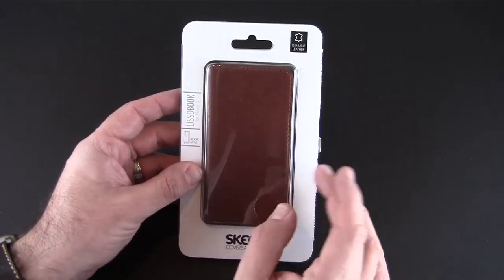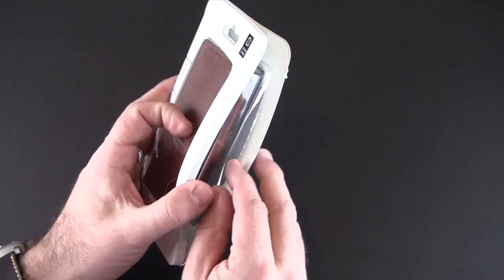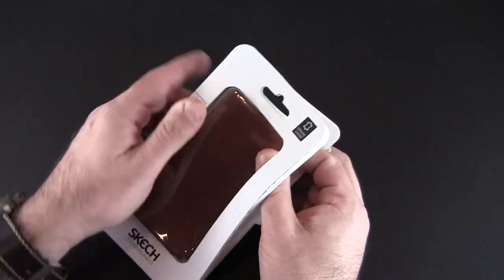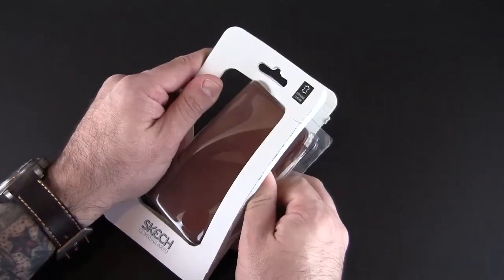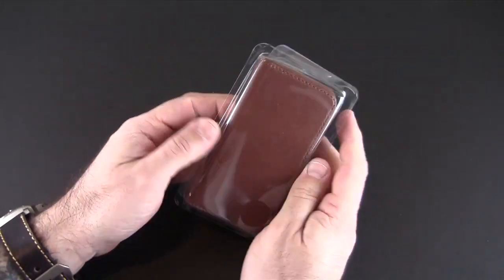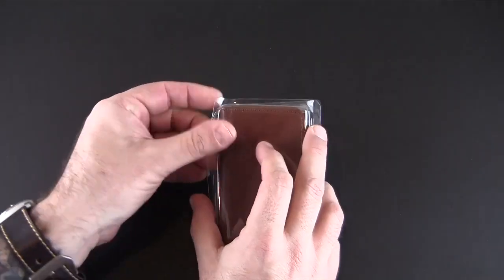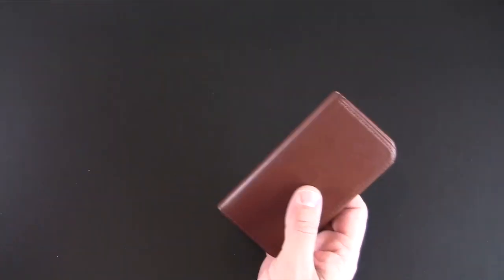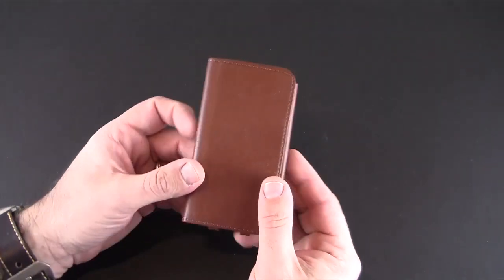This case is not out officially yet but it should be out very soon via Amazon as well as the Unilove marketing website. Let me get it out of the packaging. There is nothing in here other than the case itself. This is a wallet style case but kind of a unique one. It has a couple cool features and here it is.